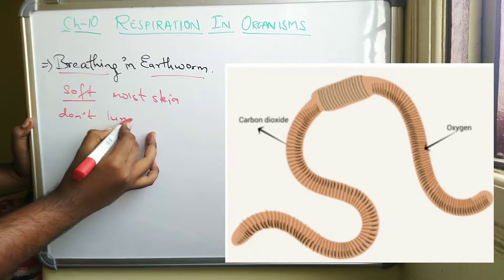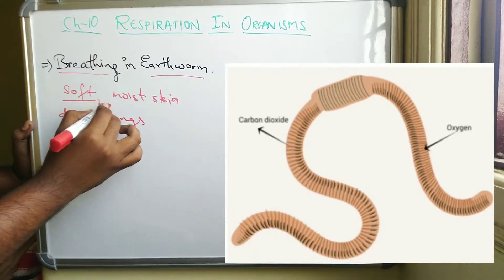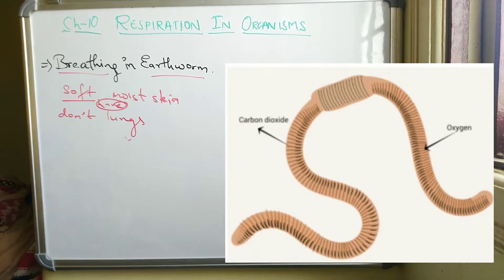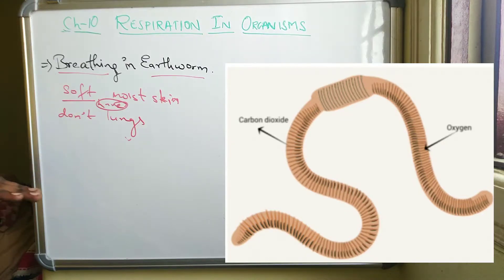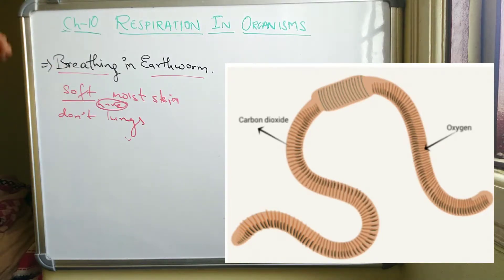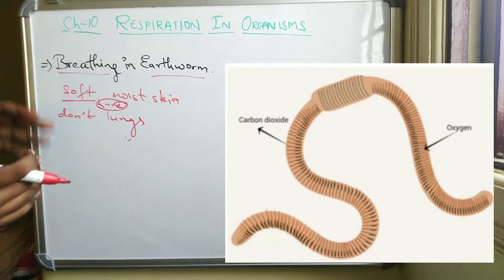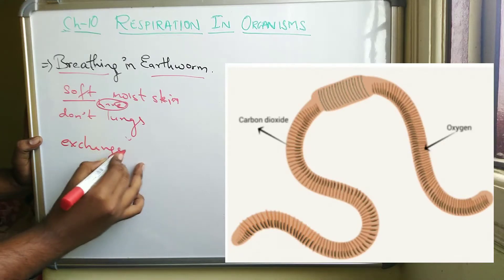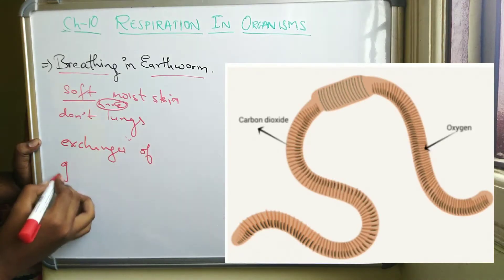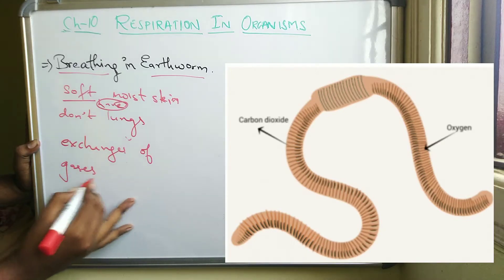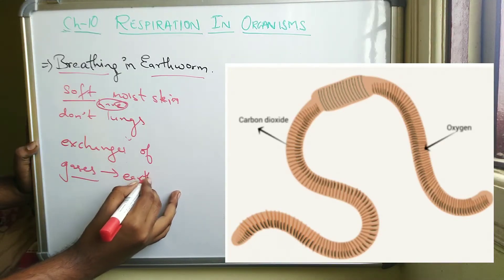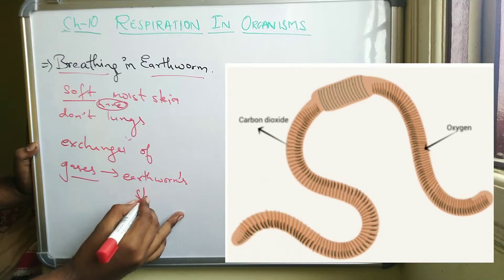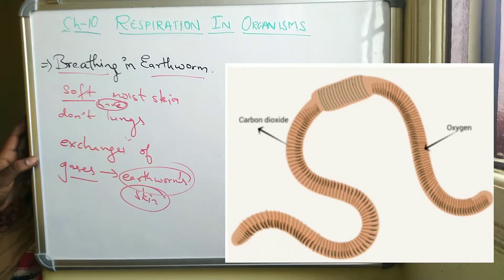So earthworms don't have lungs. The gases can easily pass in and out of the earthworm throughout its skin, since it is moist. So the exchange of gases happens through the earthworm's skin — that you have to remember. Exchange of gases happens through the earthworm's skin.